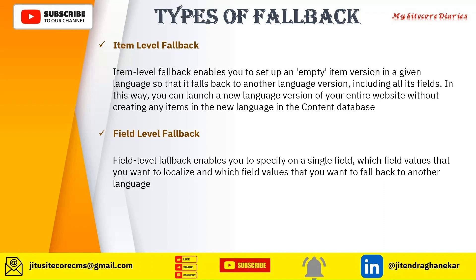For the English language home page, there might be a field like a title or a logo. Let's take the example of the title field. The title of the page in 'en', the global language, you want to fall back to the 'en-IN' language. In that case, if you set up the field level fallback, you go to that specific field — the title field — and set up the fallback there. The 'en-IN' item should have a version, but if the title value is not filled in, it will be picked from the 'en' field. That is how field level fallback works.